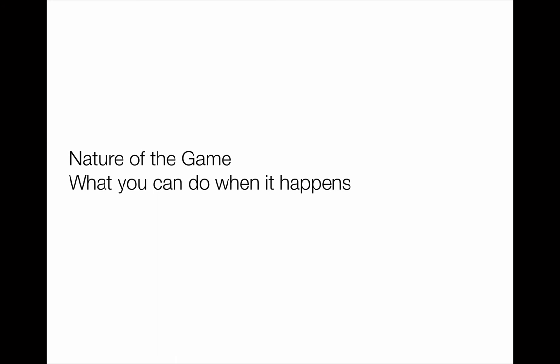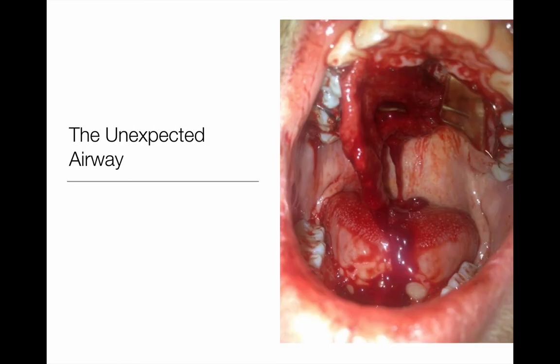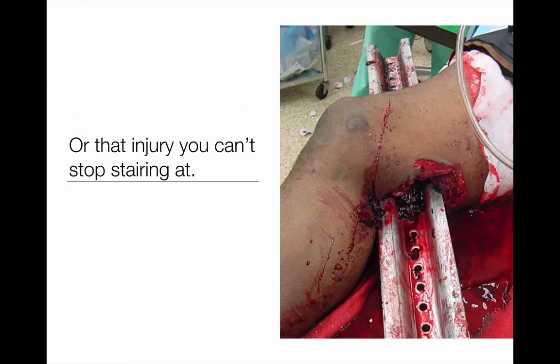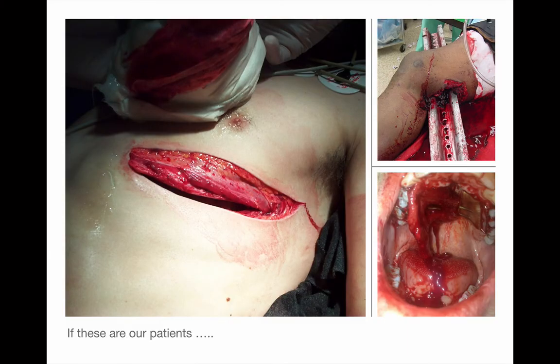Let's try to define what we mean by chaos. We've all worked in an emergency room and seen chaos happening, but how do you really define it? Is it the unexpected airway, or the guy who comes in with a pre-made thoracotomy, or that injury you just can't stop staring at - the thing you didn't expect because you thought it'd be an easy day?